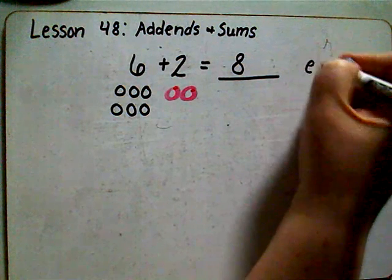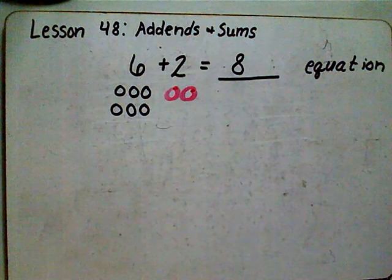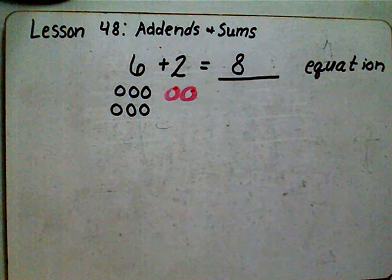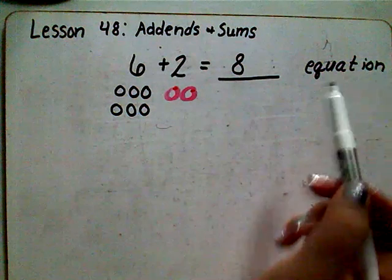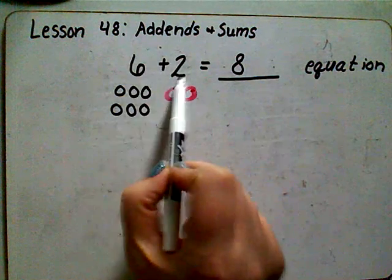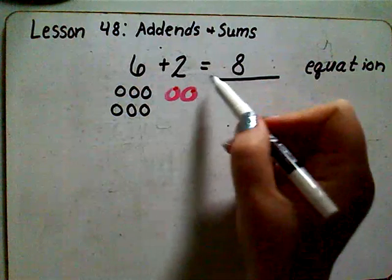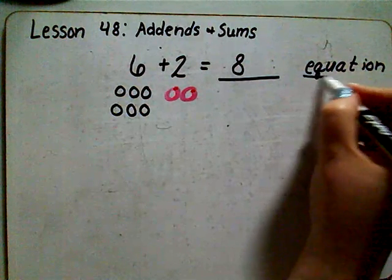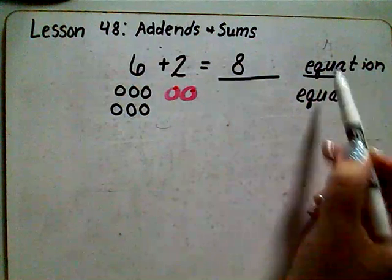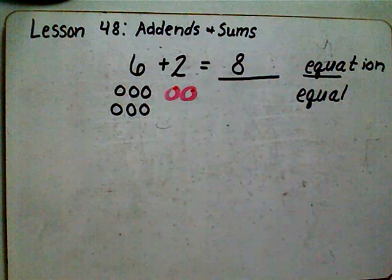Six plus two equals eight — that is what we call an equation. An equation is the math word for a number sentence. Just like in reading a sentence starts with a capital letter and ends with a period and is a complete thought, in math we have number sentences. For our number sentence to be complete, one side must be equal to another side. An equation has to have an equal sign saying that two different things are the same.